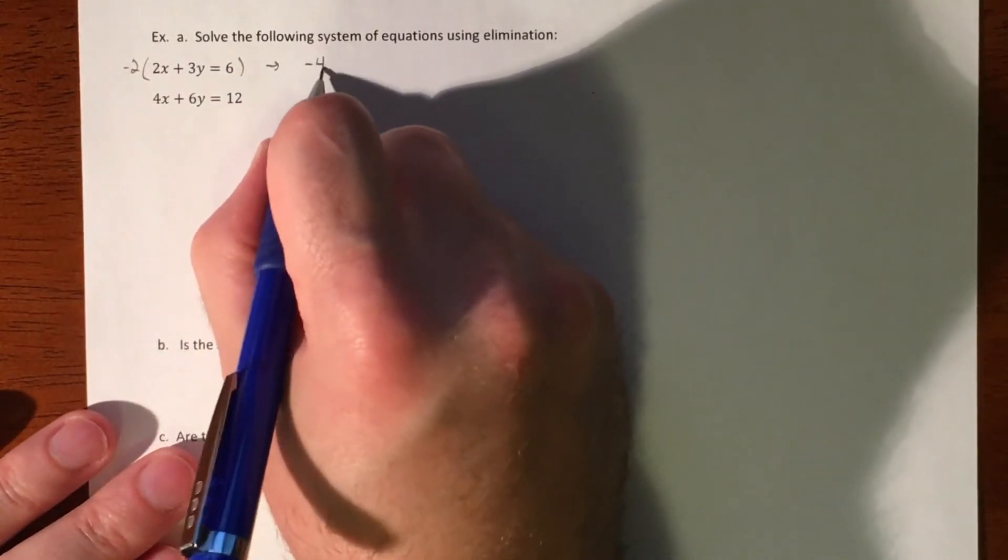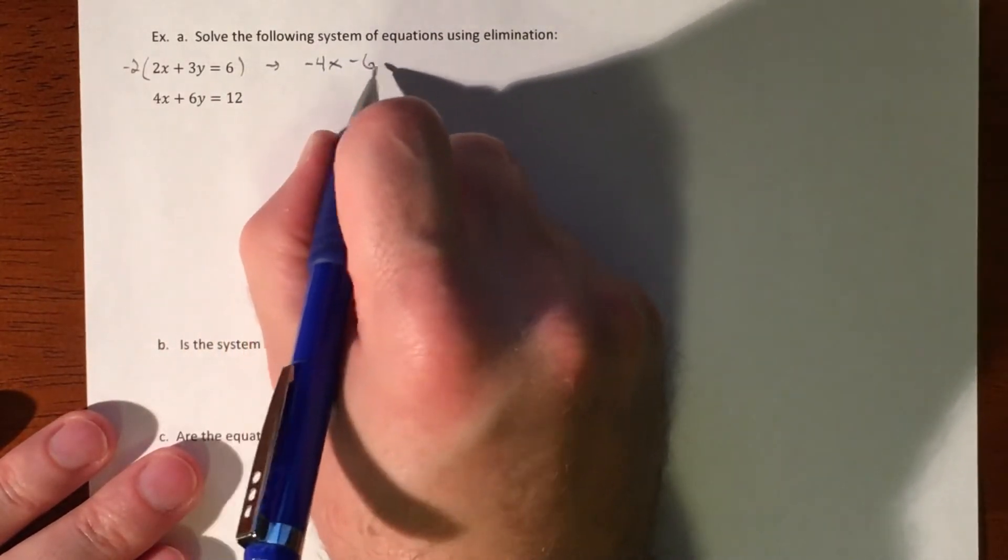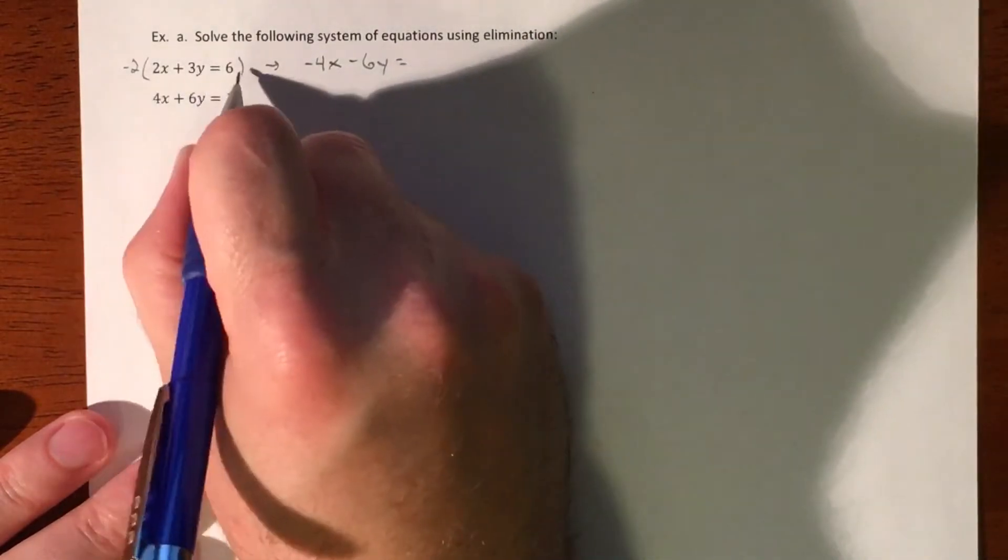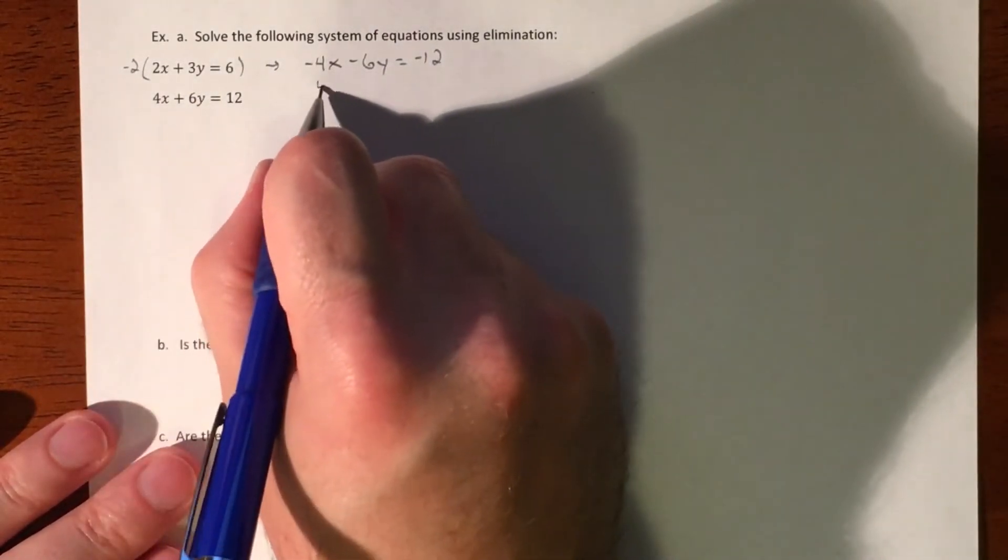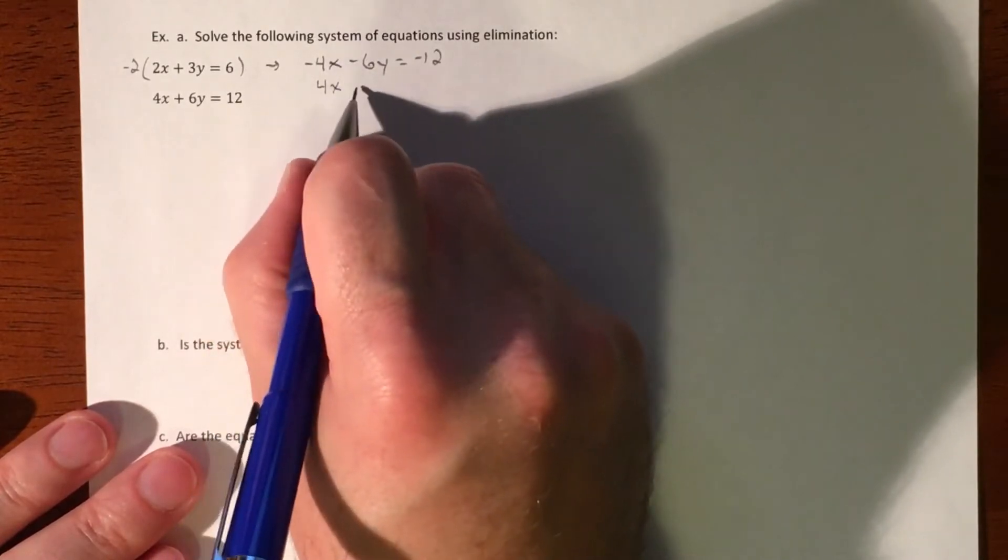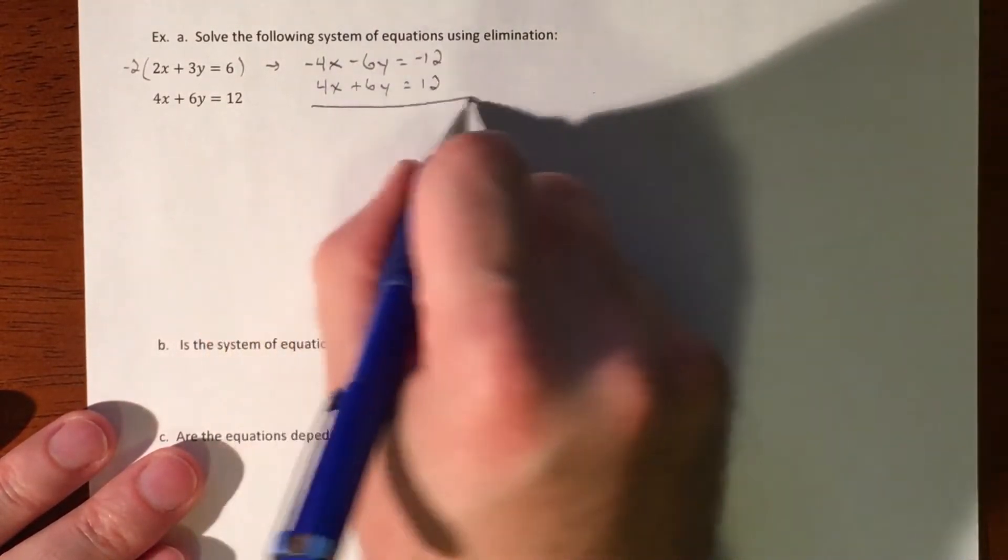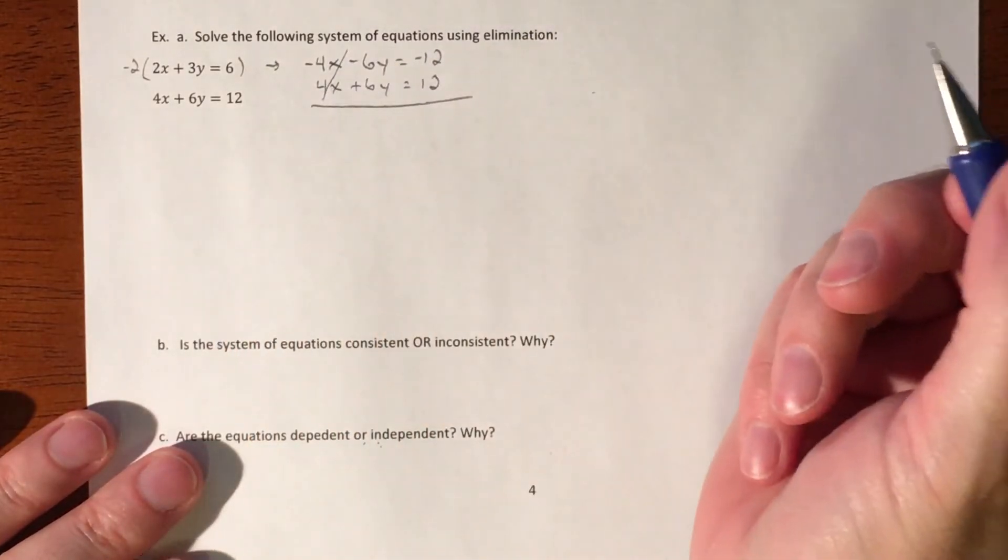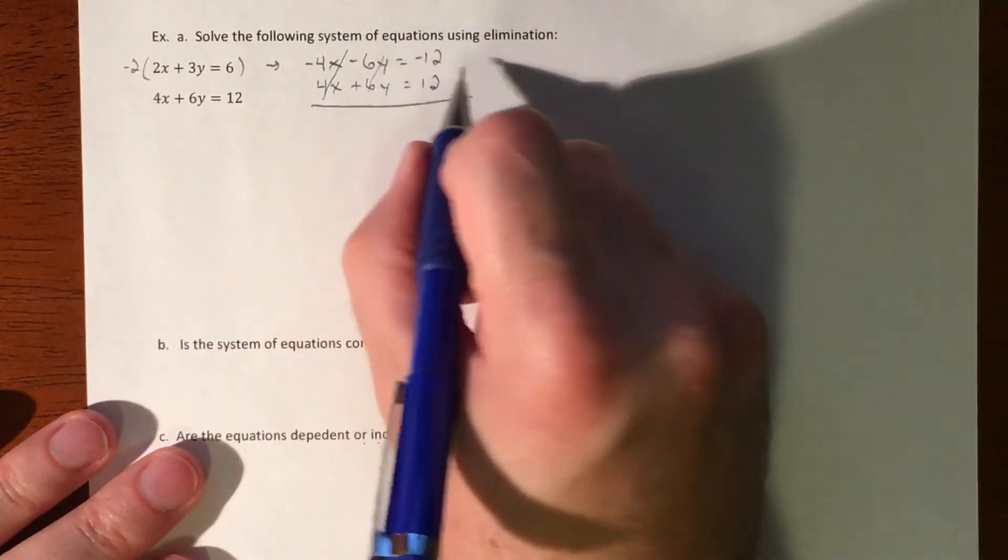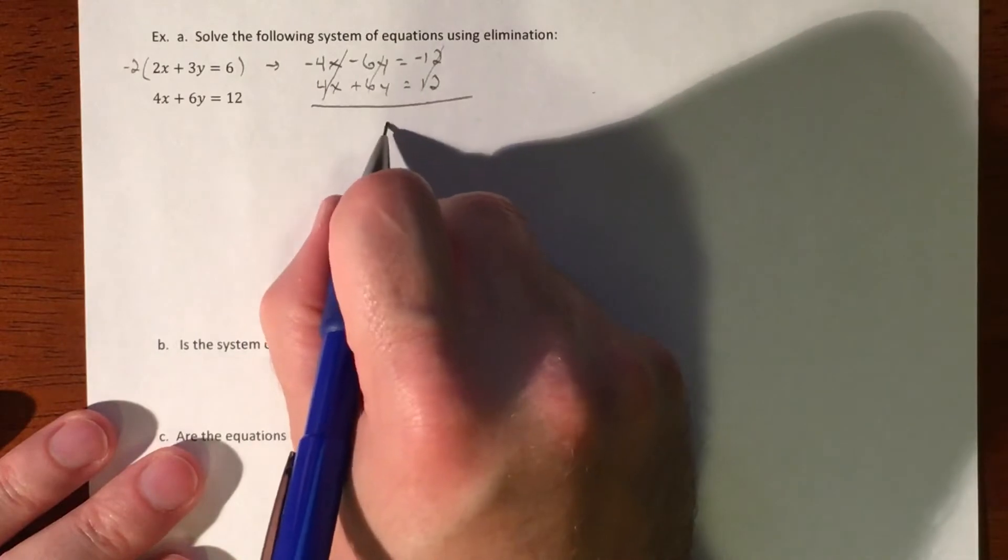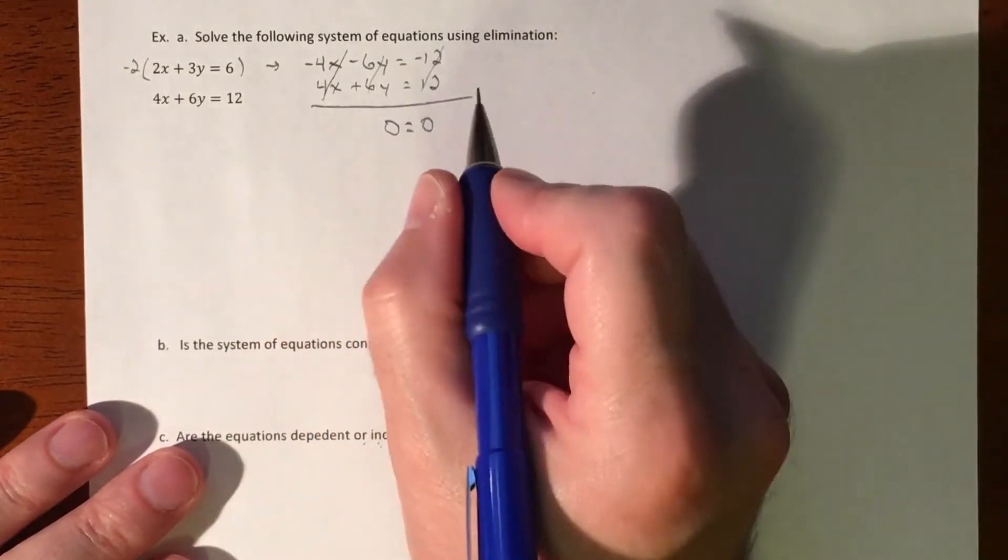That gets me negative 4x minus 6y equals negative 12, and then I didn't do anything to the bottom because I didn't need to. We add things together, so the x's go away as planned, but the y's actually go away and the numbers go away. You have 0 equals 0.